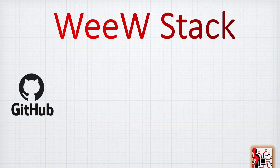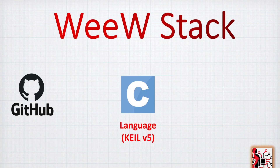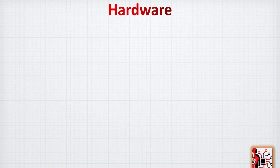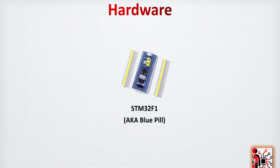As usual, the code is available on GitHub — just focus on this tutorial and download the code later to play with it. The language is C and the program used will be Keil version 5. You will need some understanding of the previous tutorials we have made for an easy and smooth experience. From the hardware side, we will need only the STM32F1 based board, also known as the blue pill.